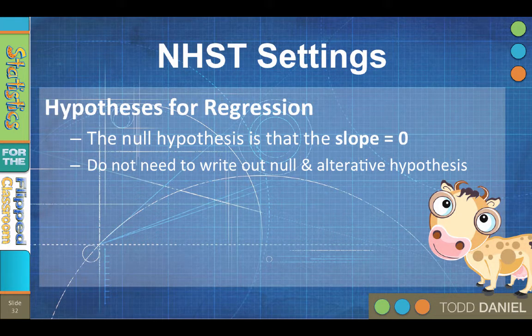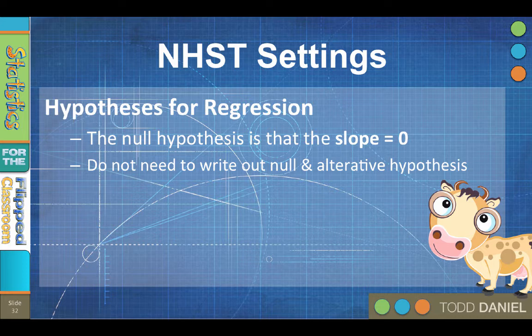We are not going to be doing hypothesis testing with regression in the same way that we have previously. However, we will be examining a model for statistical significance, so we will use all of the skills that we have developed along the way. The null hypothesis for regression is that the slope equals zero. In other words, the predictor variable does not significantly predict the outcome variable, so we might as well just predict with the mean. You do not need to write out a full null and alternative hypothesis. Instead, you will state that one variable will predict another variable in the regression model.